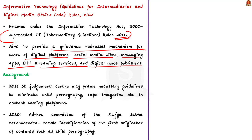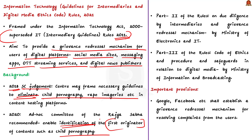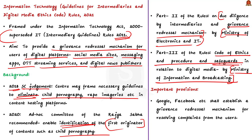The IT Rules 2021 are expected to empower ordinary users of digital platforms to seek redressal for grievances. To understand these rules, we must know about a Supreme Court judgment in 2018, wherein the court observed that the center may frame necessary guidelines to eliminate child pornography, rape and gang rape imageries, videos and sites in content hosting platforms. Later in 2020, an ad-hoc committee of the Rajya Sabha recommended enabling identification of the first originator of such content. Part 2 of the rules is administered by the Ministry of Electronics and IT, and Part 3 by the Ministry of Information and Broadcasting.